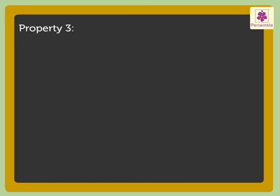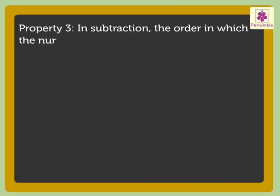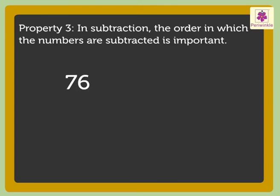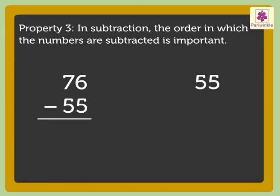Property 3: In subtraction, the order in which the numbers are subtracted is important. Let us take the numbers 76 and 55. When we subtract 76 minus 55 and 55 minus 76, we do not get the same answer. Thus,